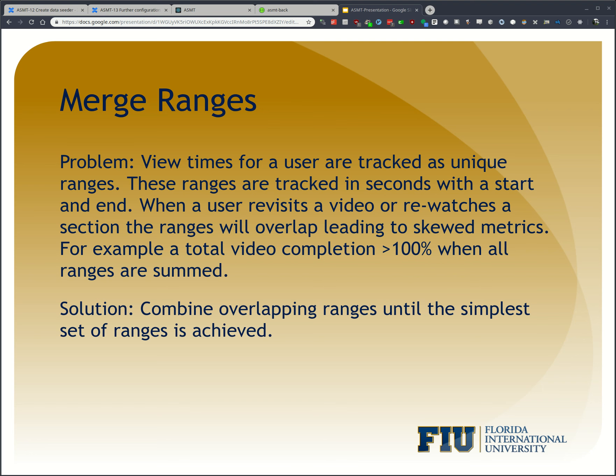I've been tasked with presenting a particularly interesting algorithm from this project. View times for the user are tracked as unique ranges over seconds from start to end. When a user revisits a video or rewatches a section, the ranges overlap and lead to skewed metrics. For example, if a user watches a video three times and you simply add up all the time viewed, they may show over 100% of the video viewed. The algorithm combines all the ranges into their simplest composition, handling overlapping ranges and ranges that consume other ranges.